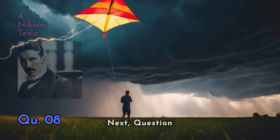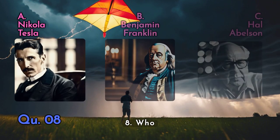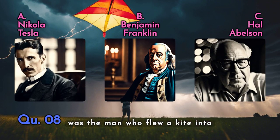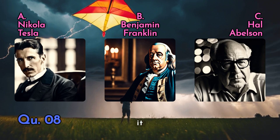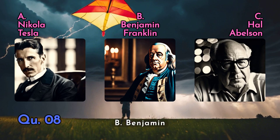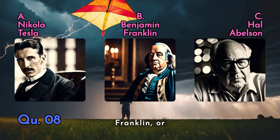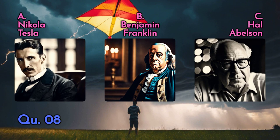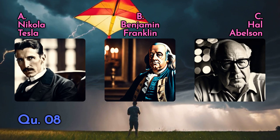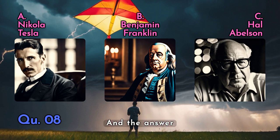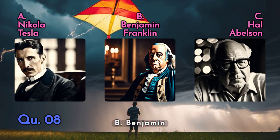Question eight: Who was the man who flew a kite into a thunderstorm? Was it A) Nikola Tesla, B) Benjamin Franklin, or C) Hal Abelson? The answer is B — Benjamin Franklin.